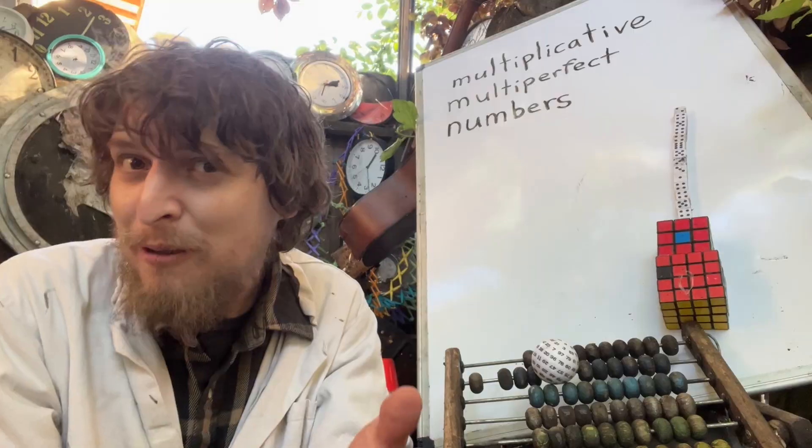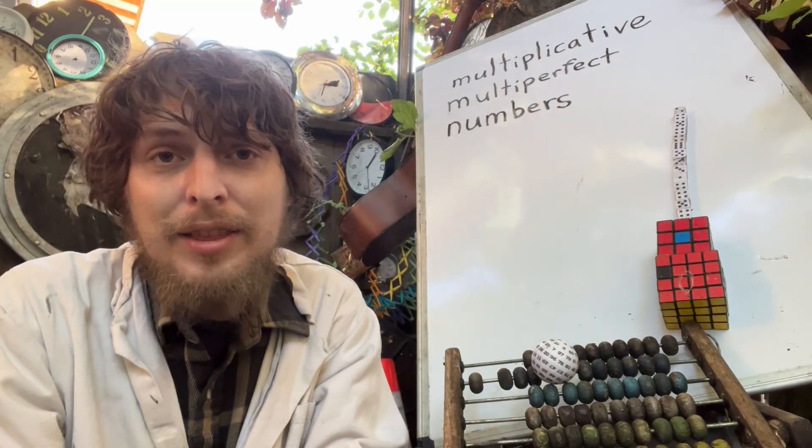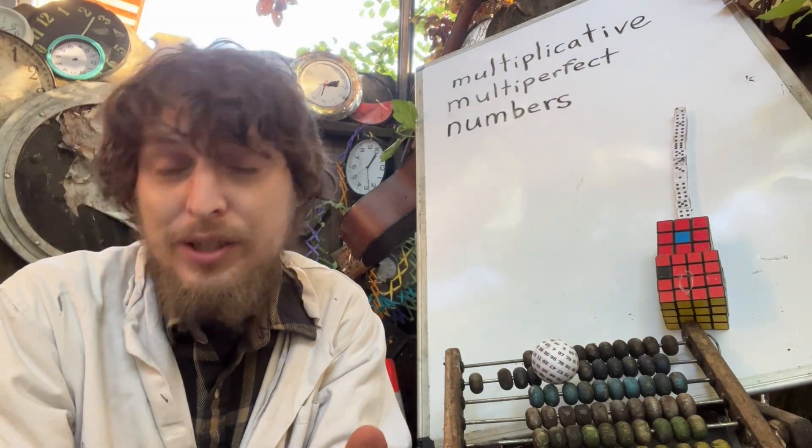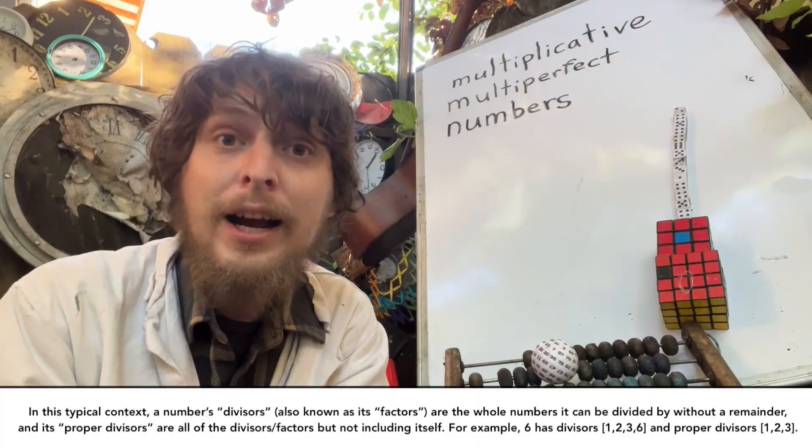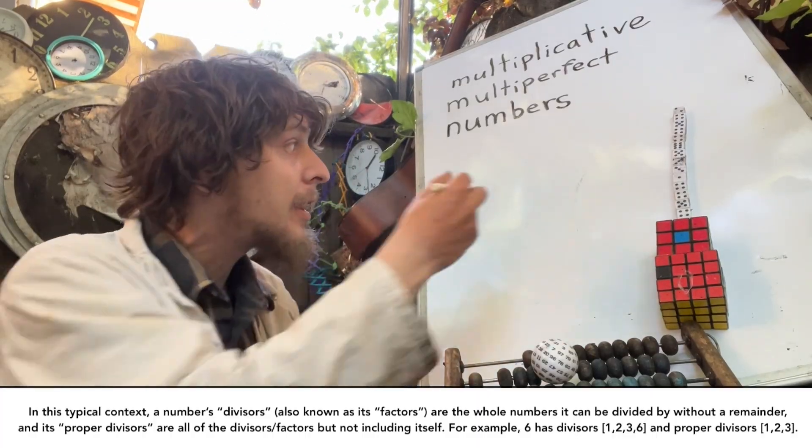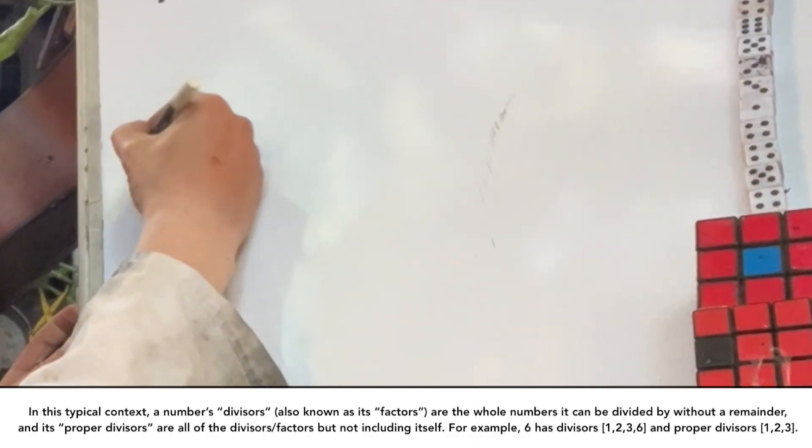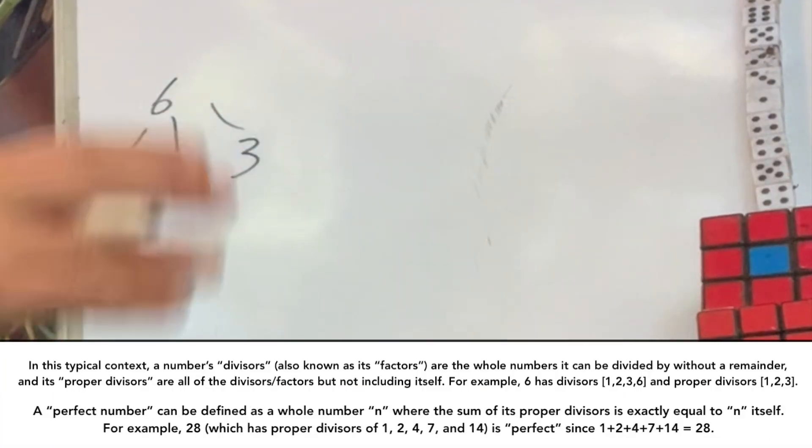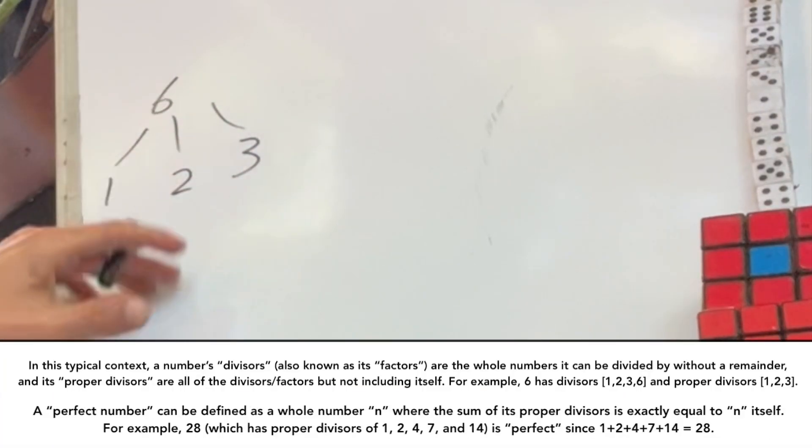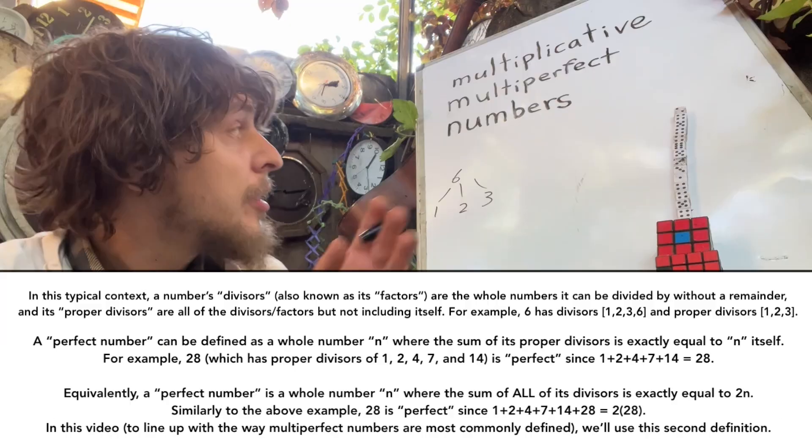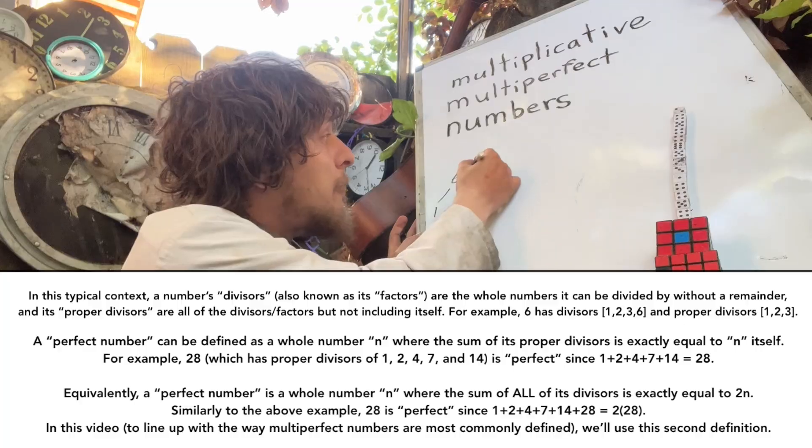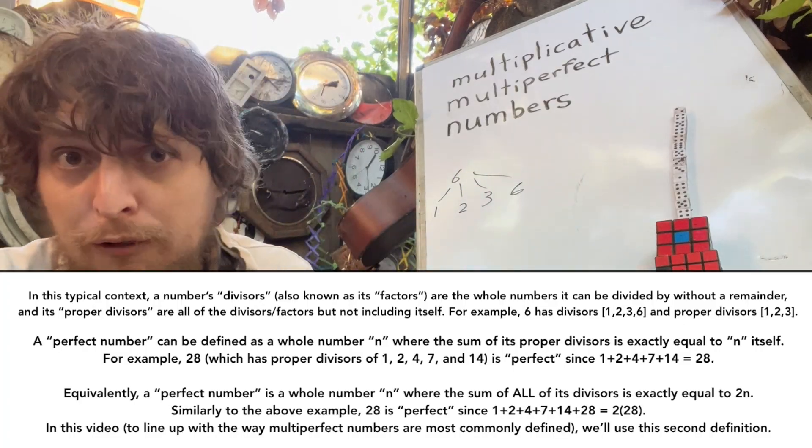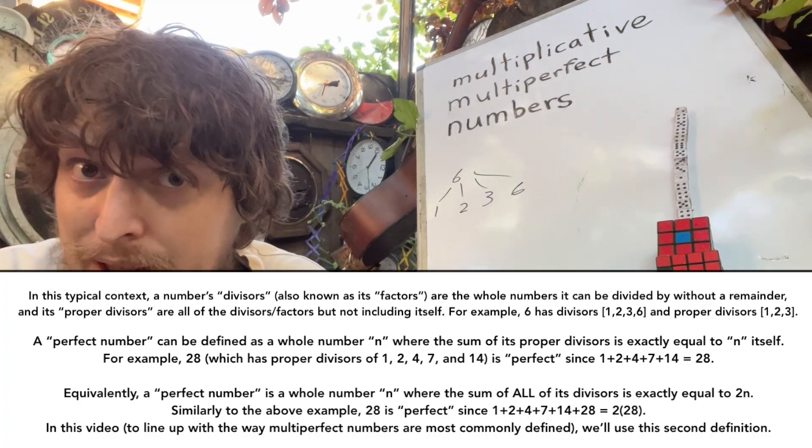First, a perfect number are numbers that, commonly phrased, if you take all of their factors, the numbers that could divide them apart from themselves, and add those up, we get themselves. However, we could also equivalently phrase that as we add up all of their factors, including themselves, and we end up with twice themselves exactly.